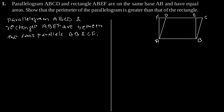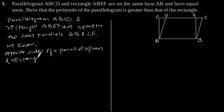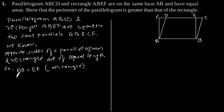Now we know that opposite sides of a parallelogram and rectangle are of equal length. So AB is equal to EF for the rectangle and AB is equal to CD for the parallelogram.